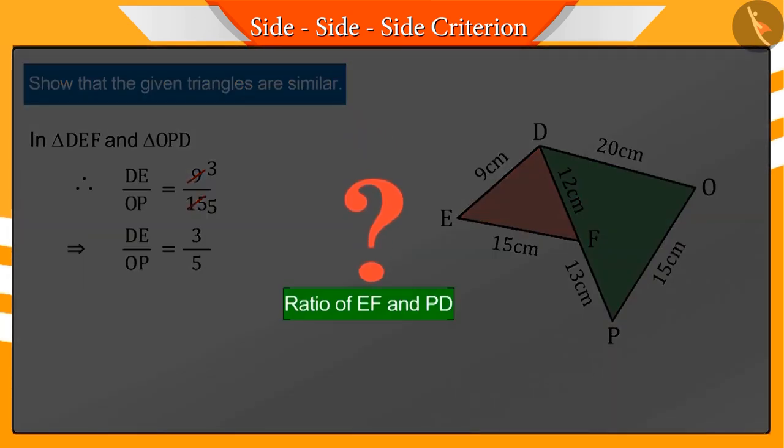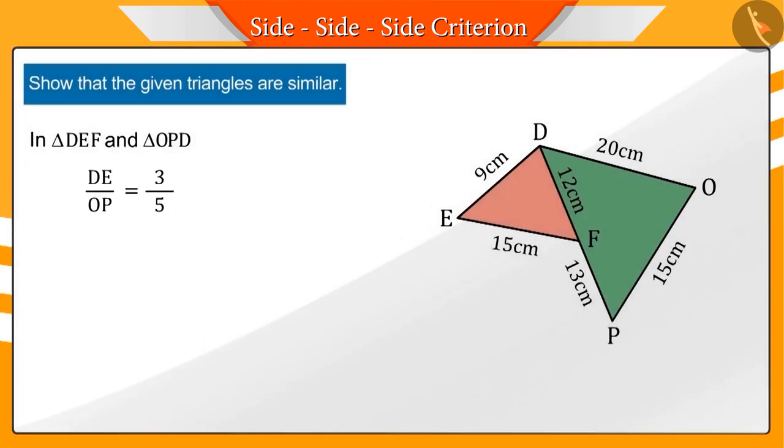Now, can you tell the ratio of the sides EF and PD? Very good. For this, we need to find the length of side PD first. If we pay attention, then we will see that inside PD, the sum of sides PF and FD is 25. Therefore, the ratio of EF and PD is also 3 by 5.